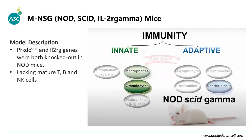In NSG mice, the SCID mutation and IL-2 receptor gamma chain gene are both knocked out in the NOD background. This mouse is extremely immunodeficient — it cannot mature T cells, B cells, or NK cells. Compared to previous immune-deficient models, important immune components like B cells, T cells, antibodies, complement system, and NK cells are all affected, and macrophages are also somewhat affected.